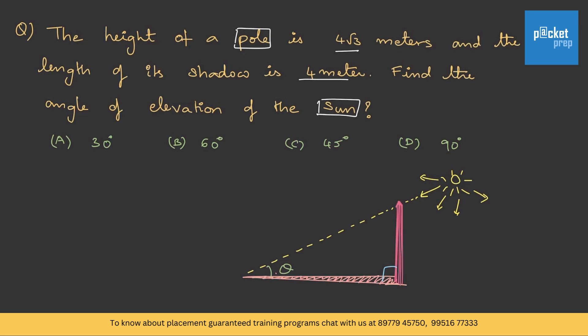They gave the height of the pole is 4 root 3, so this is 4 root 3 meters, and the shadow length is 4 meters. Technically, this is the opposite side and this is the adjacent side. Let me use the formula. We know that tan theta is opposite by adjacent. Let us substitute: tan theta is 4 root 3 by 4, that is root 3.